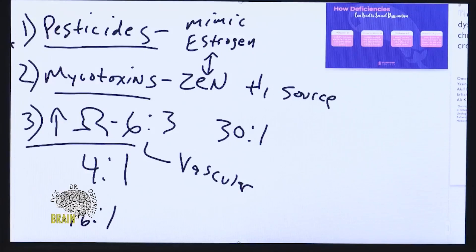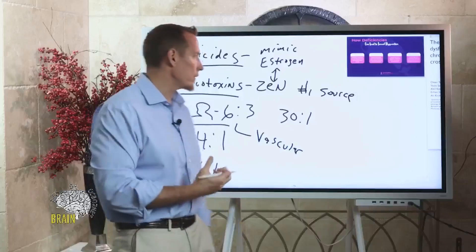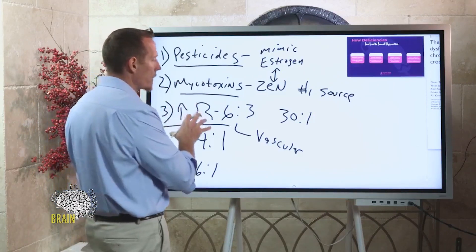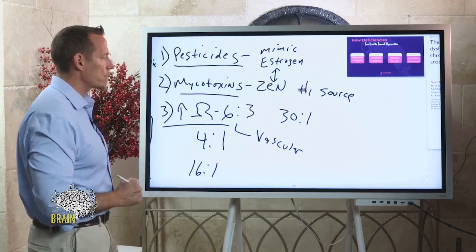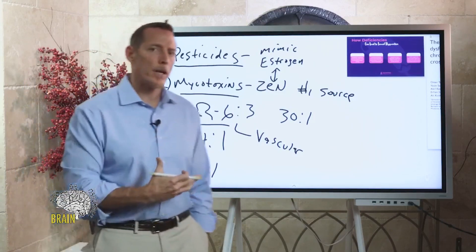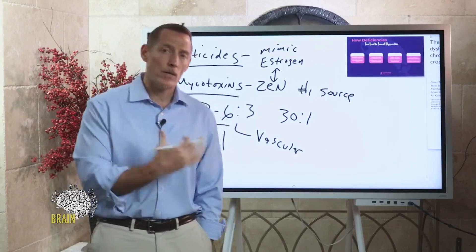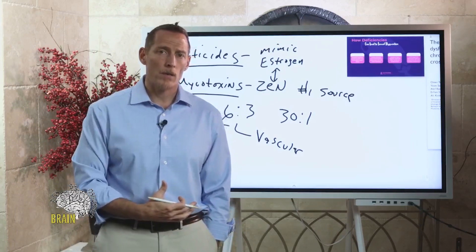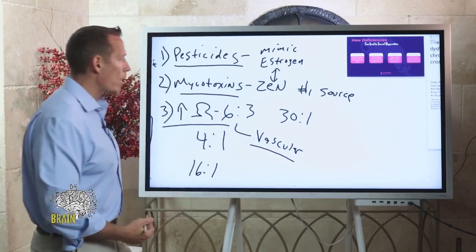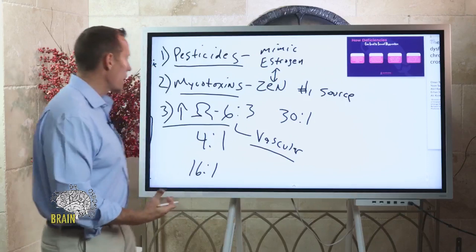Grain is the number one source of mycotoxins in the human diet today — especially in the US, where we don't have a great measuring and monitoring system in place for mold toxins in food. And the omega-6 to omega-3 ratio of grain is super high in omega-6, so when you're a heavy grain consumer you're getting massive quantities of omega-6 and very low levels of omega-3, driving vascular dysfunction.